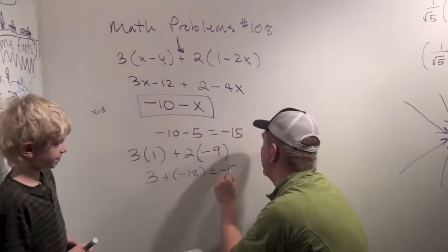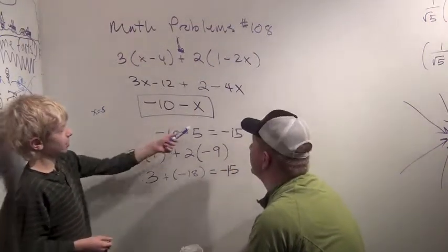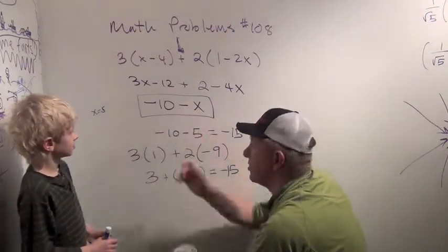Hey! Oops. I forgot. I forgot the one. Three plus minus eighteen is minus fifteen. Just like we got up there. Yeah. So hey, I think this is probably right.